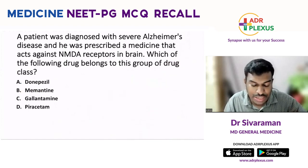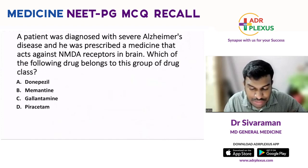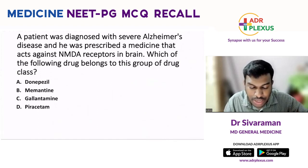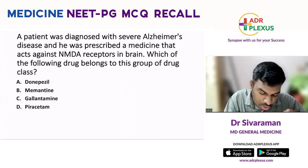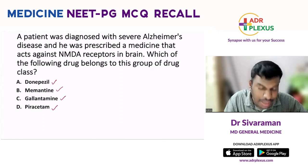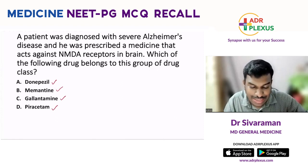The second question: a patient diagnosed with severe Alzheimer's disease was prescribed a medicine that acts against NMDA receptors in the brain. Which of the following drugs belongs to this group? The options were donepezil, memantine, galantamine, and piracetam.